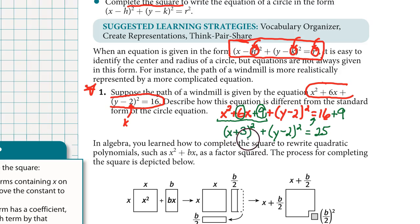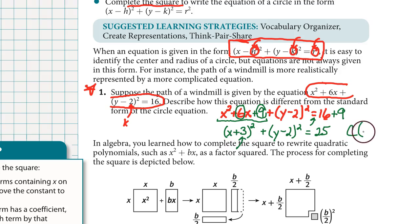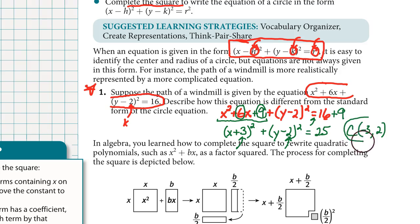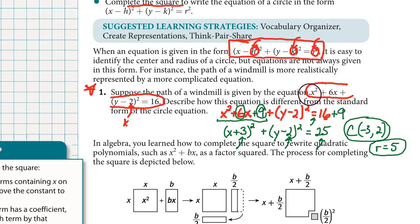We now have the format we want for a circle. To find the center, we look at the numbers after the subtraction signs. The x-coordinate is negative 3 — not positive 3 — because the plus sign is like having x minus negative 3. The y-coordinate is 2, so the center is at (−3, 2). For the radius, we look at the right side: the radius isn't 25 — it's 5, the square root of 25. We used completing the square to rewrite the original equation into the format we needed.